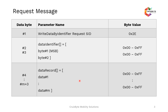A few examples of write data by identifier use cases include writing programming information into the server, such as writing the VIN data into memory, or the software version or hardware version.